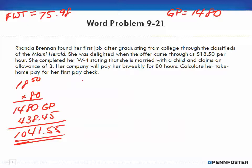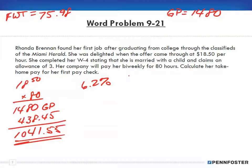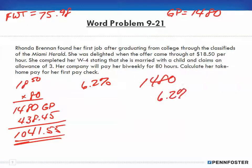That's how we calculated our federal withholding tax: $75.98. Our gross pay is $1,480. Now we have to do Social Security. Social Security is 6.2% and the limit, according to the book, is $110,100. We're most likely not going to hit that limit in these examples. Since this is her first paycheck, she's starting at zero wages, and with only $1,480 earned she's well below the limit. So we take $1,480 times 6.2%, which gives us $91.76 for Social Security.